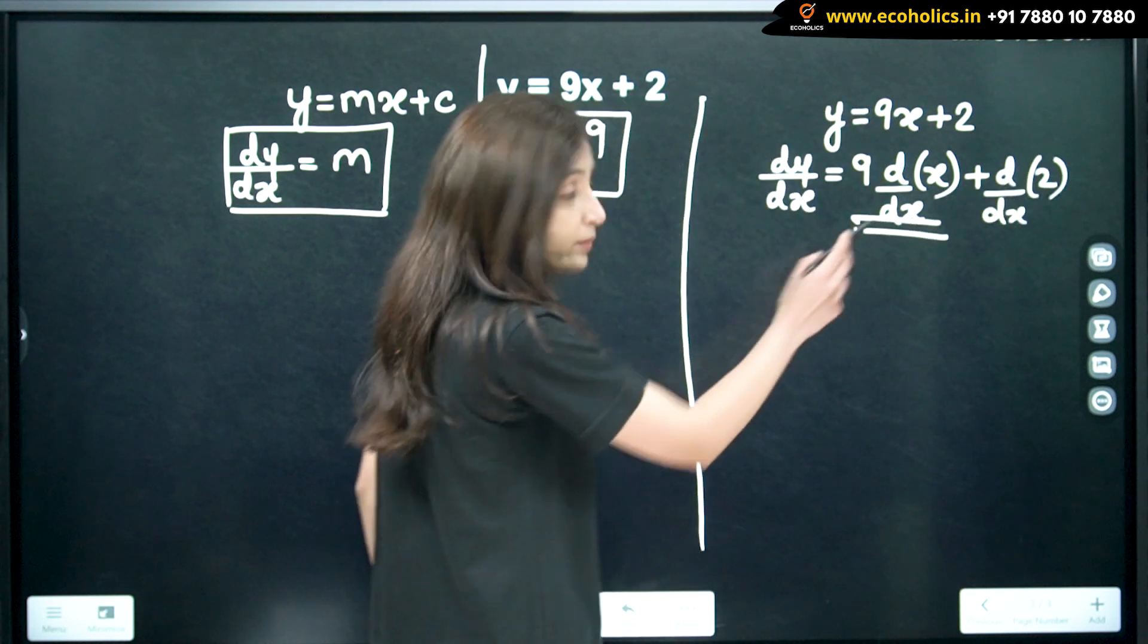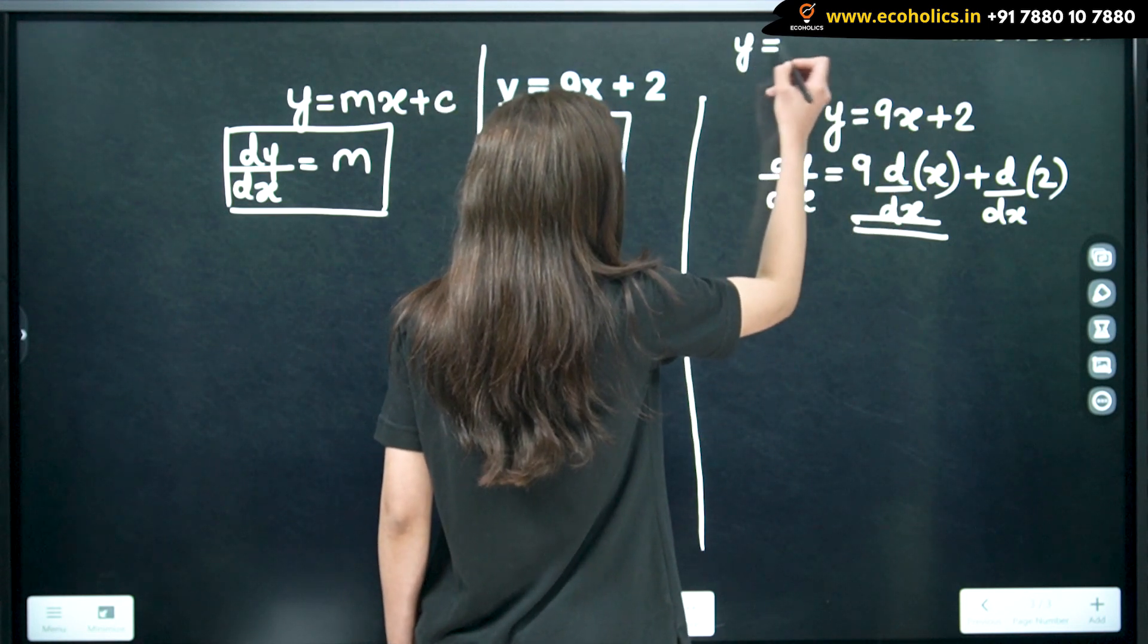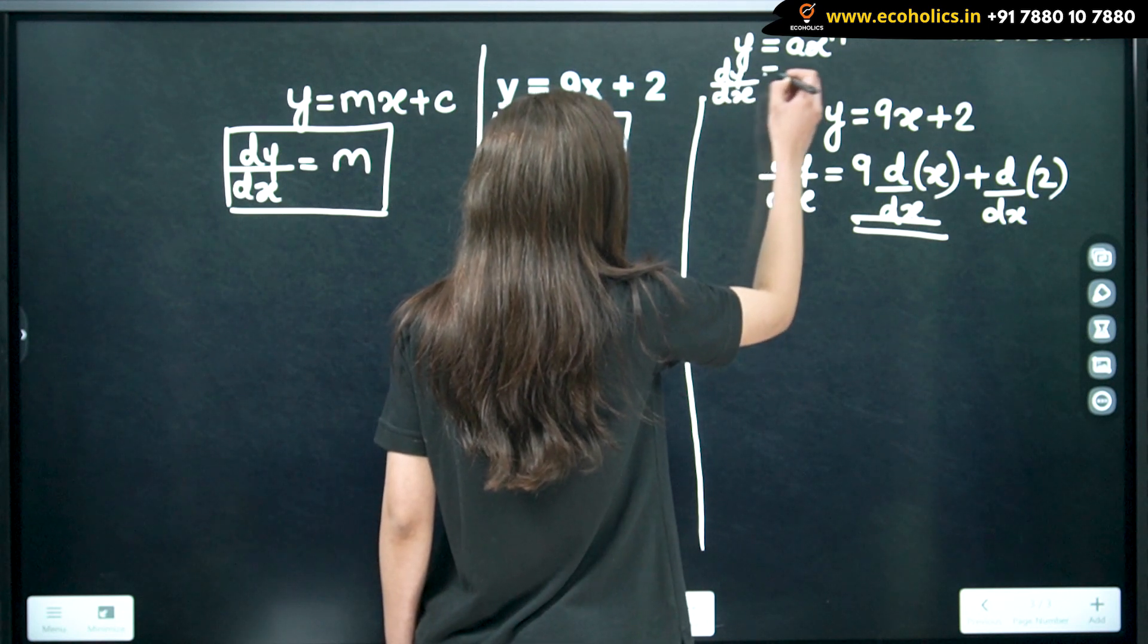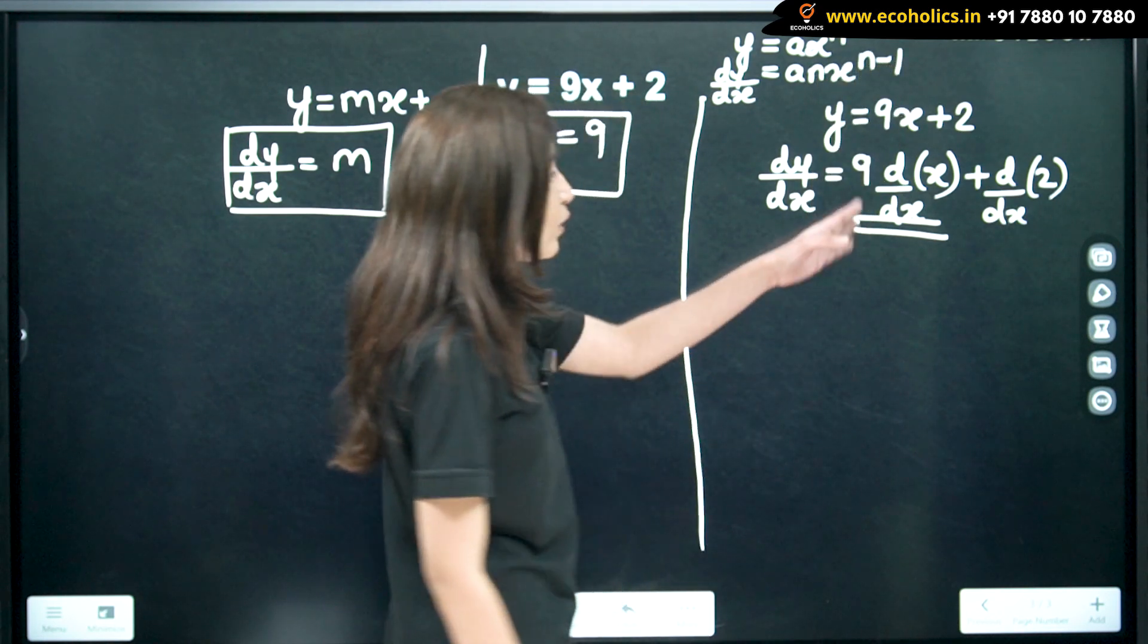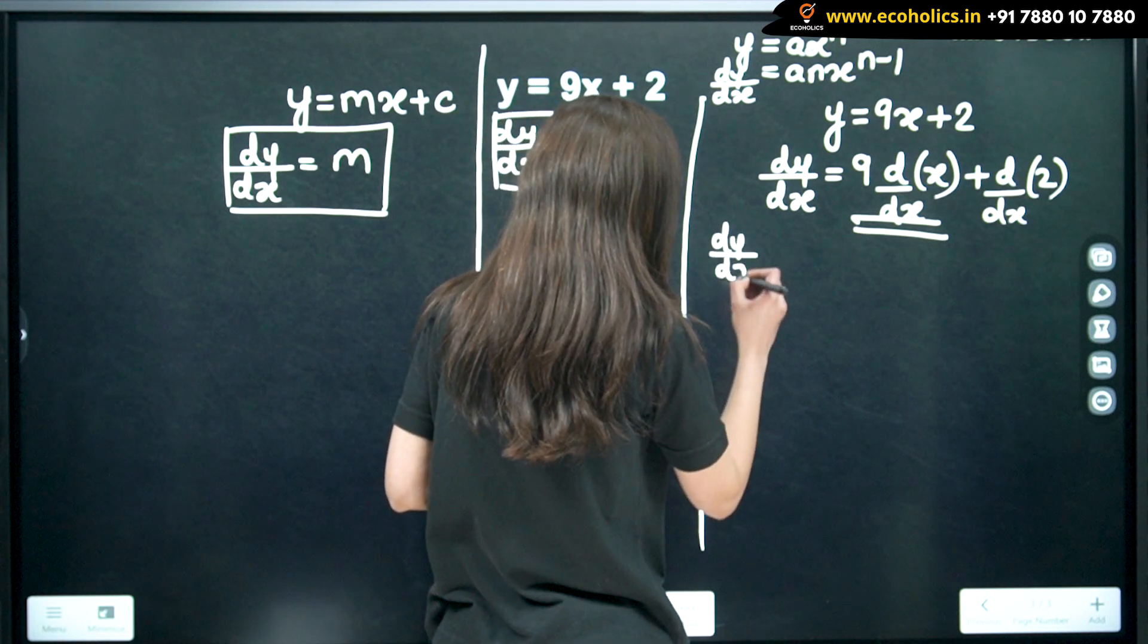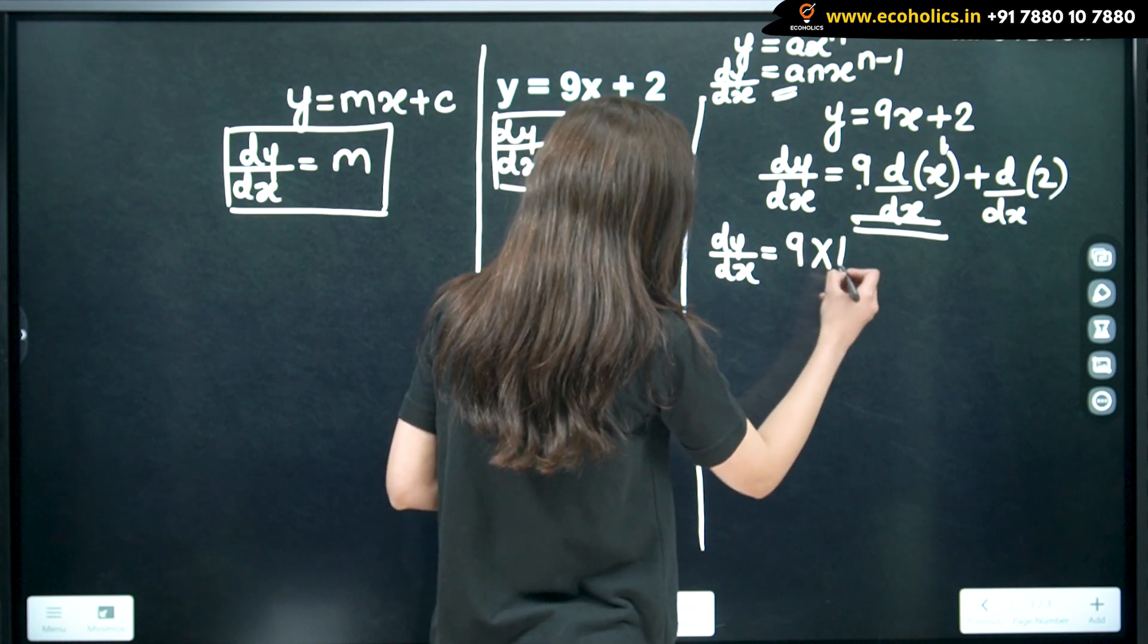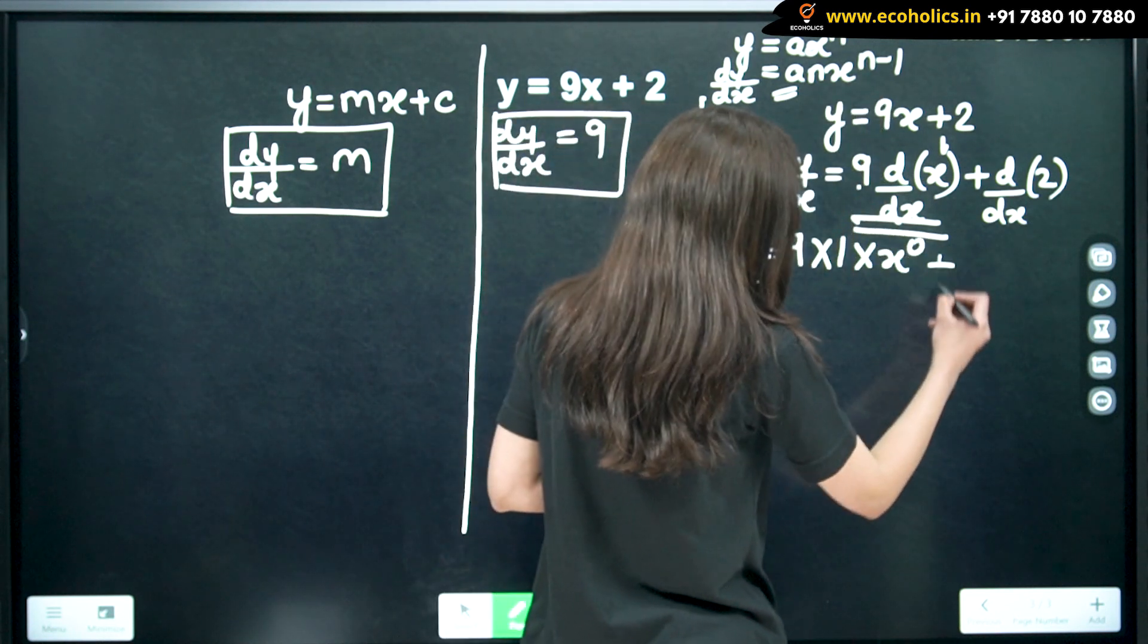Which rule I have used over here is? The rule which I have used in this case is y when it is equal to 9x plus 2 is equal to 9x plus 1. So, we will be using this. So, our constant term in this case is 9. So, 9 into 1 into x raise to 1 minus 1 is 0 plus 2.